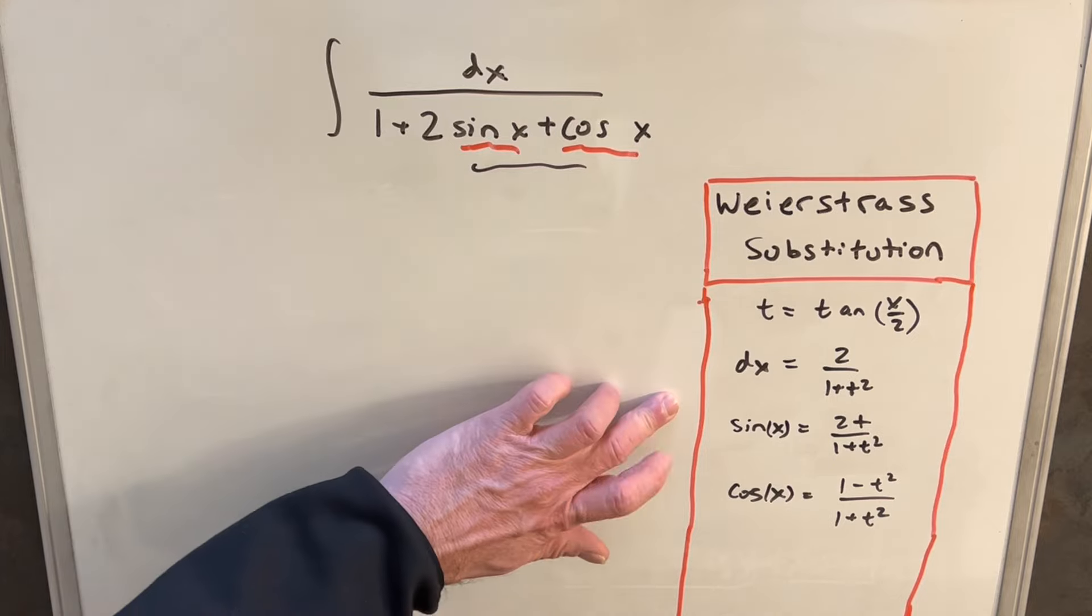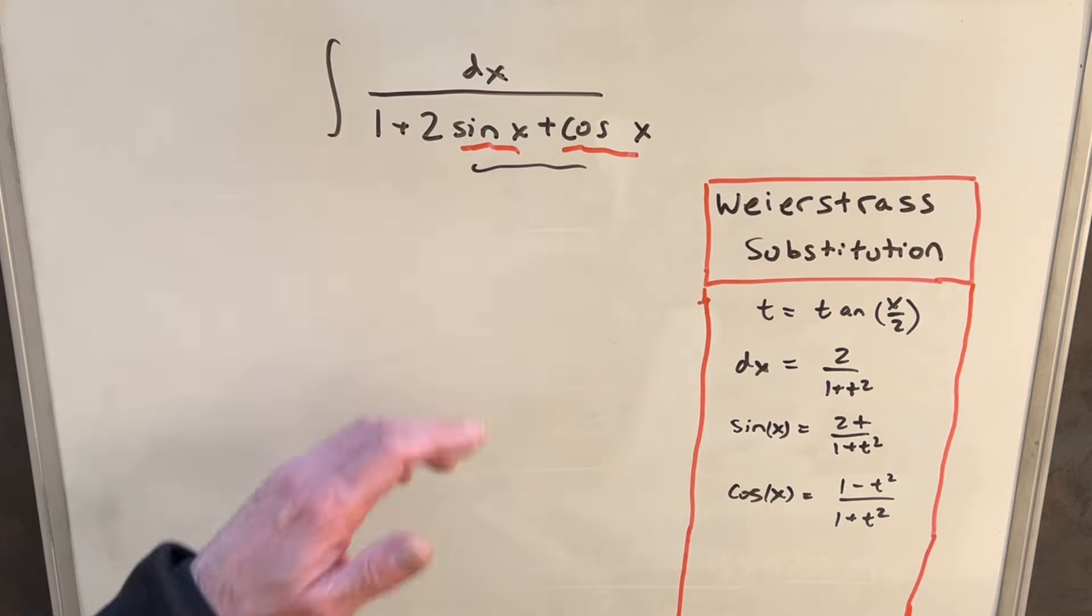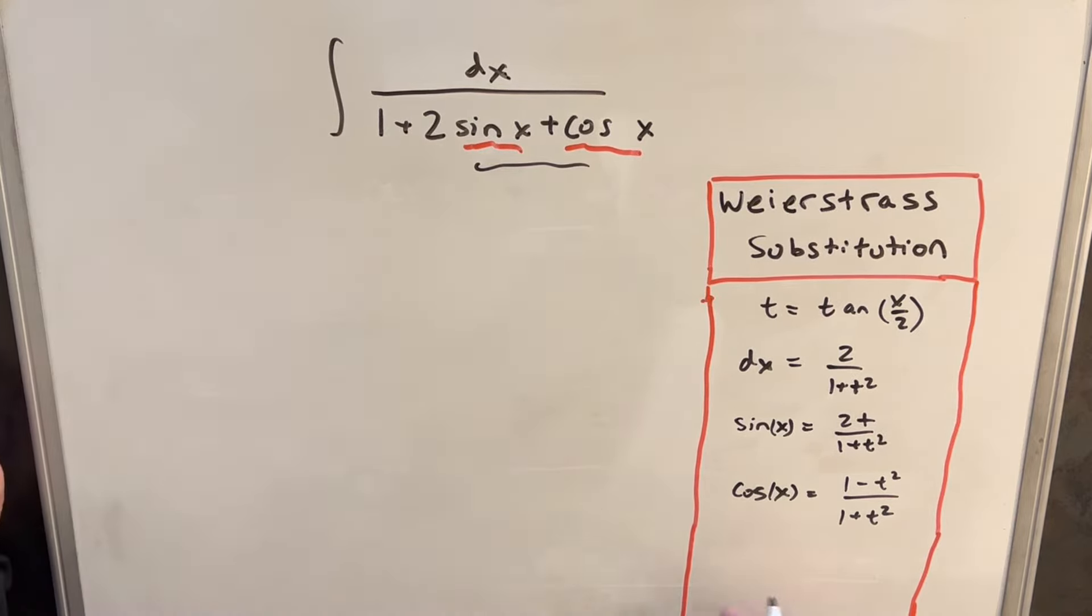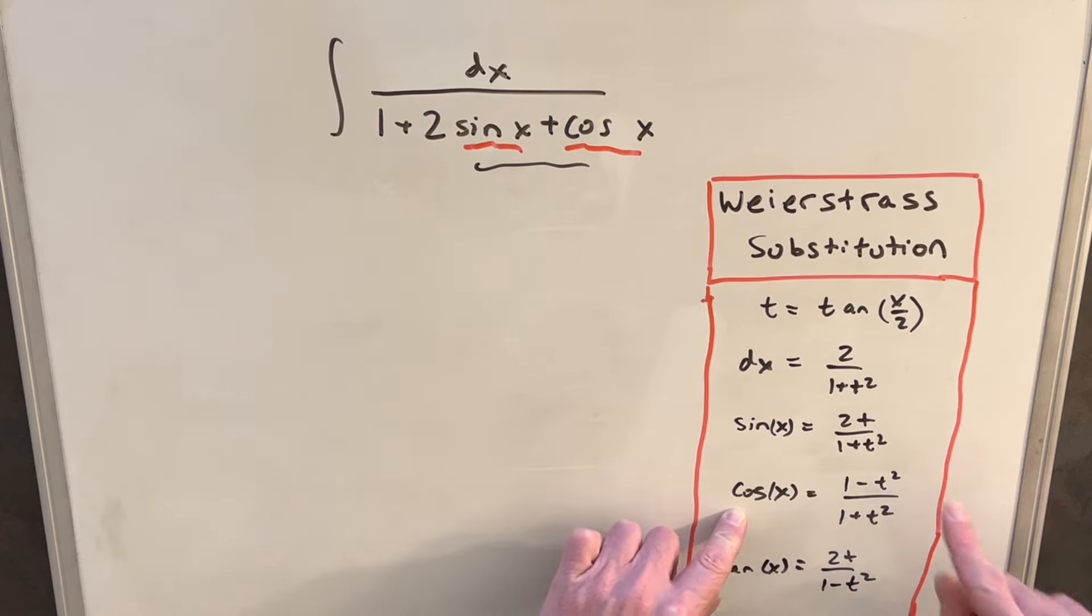Okay, so now over here on the right, we have everything I think we need to solve this problem. One thing I'll add to this list, even though we don't need it for this problem, is we could also find tan of x by just having sine of x divided by cosine x. And that's just going to be 2t over 1 minus t squared. And similarly, we could do the same thing if we want. Secant is just going to be the reciprocal of cosine, and cosecant is going to be just the reciprocal of sine.